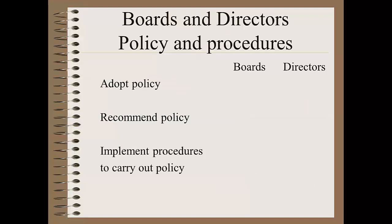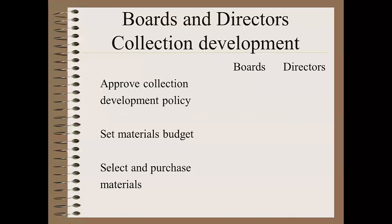On to policies and procedures. As I've already said, boards have the responsibility of adopting policies for the library. However, this shouldn't be done in a vacuum. A good situation is one where the director feels free to bring recommendations on policy matters to the board, and the board and director work together to develop the policy before adoption. Once adopted, it's up to the director to implement the most suitable procedures to carry out the policy. As part of its policy-making power, the board should have a material selection or collection development policy in place, and as part of its budget-setting authority, there is a set amount for expenditures on library materials such as books and DVDs. The duty of selecting which materials to purchase and ordering them is the library director's — or in larger libraries, other staff to whom the director delegates. Boards should not be making decisions about which books to purchase or which magazines to subscribe to.